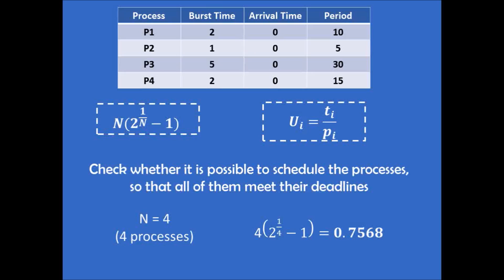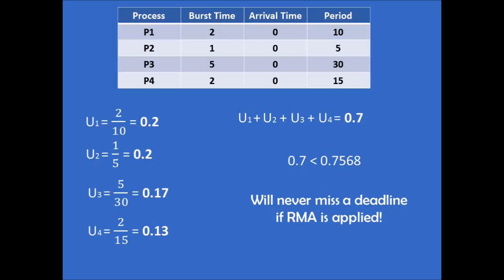The second equation is related to the CPU utilization of each of the processes, and it is the ratio of the burst time of the process to the period of the process. We apply this equation to find the CPU utilization of each process. For example, for process 1, we have a burst time of 2 time units, and we divide that by the period, which is 10, for a total of 0.2. We repeat that for processes 2, 3, and 4. After that, we add together the four numbers to find a total CPU utilization of 0.7. Because 0.7 is less than 0.7568, this means we will never miss a deadline if the Rate Monotonic algorithm is applied.